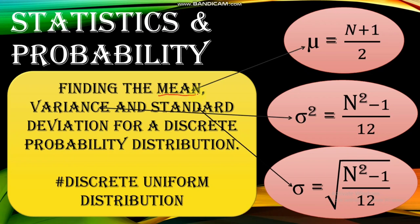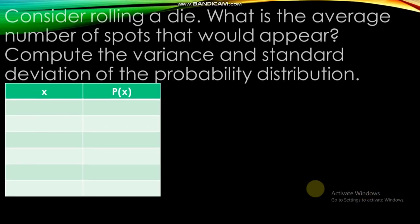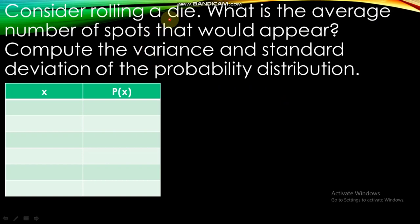To find the mean, we will use this formula if it is discrete uniform distribution. The symbol for variance — here is the formula — and standard deviation is the square root of the variance. These formulas apply when it is a discrete uniform distribution and the outcomes have equal probabilities.